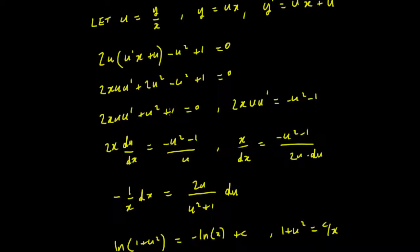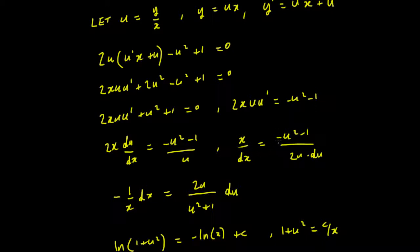Once we work through, we end up with 2x·u·u' equals minus u² minus 1. Now we want to get all the x's on one side and all the u's on the other. This is equivalent to 2x·(du/dx) and bringing u down gives u² minus 1 on the right. Rearranging: dx/x equals minus (u² minus 1)/(2u) du, and multiplying both sides by negative one and taking the reciprocal gives minus (1/x)dx equals u/(u²+1) du.